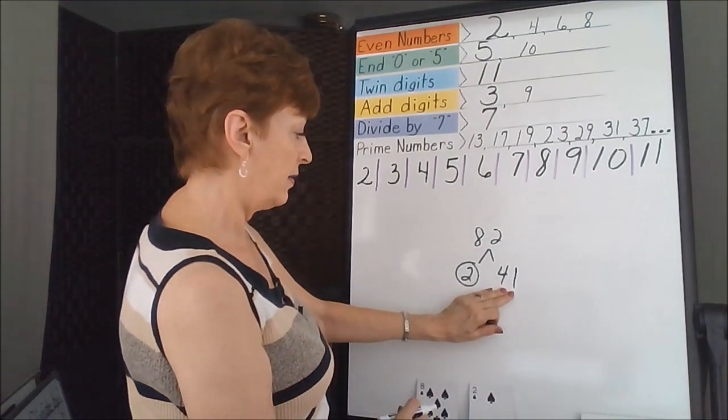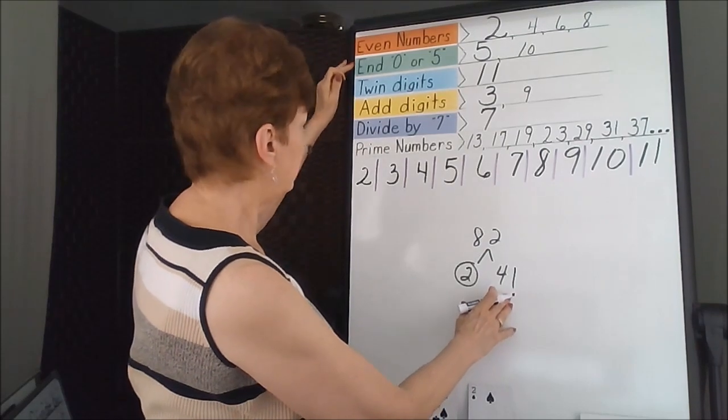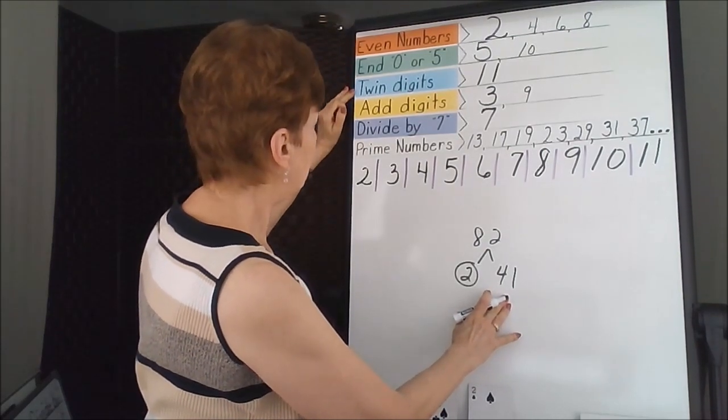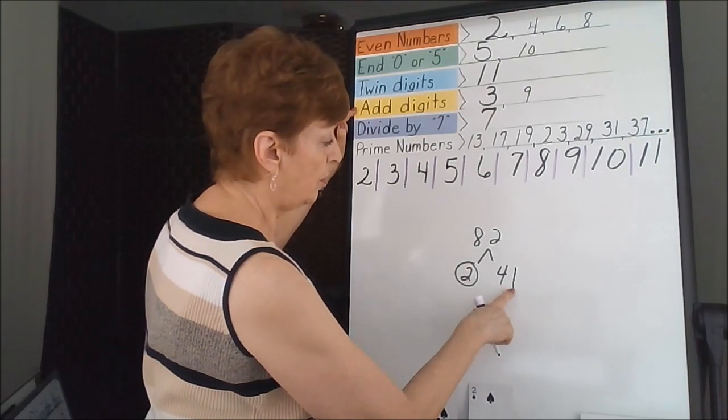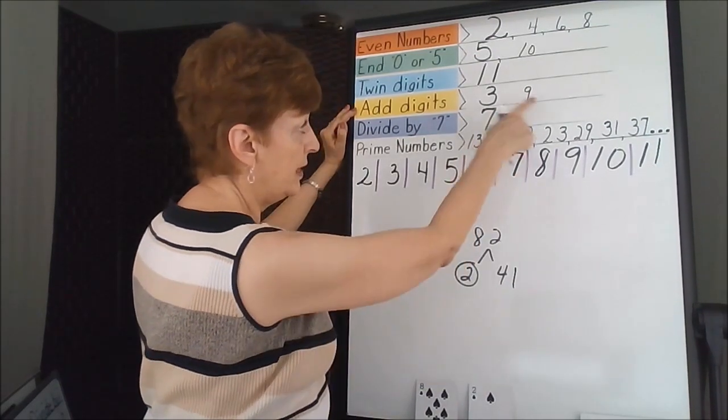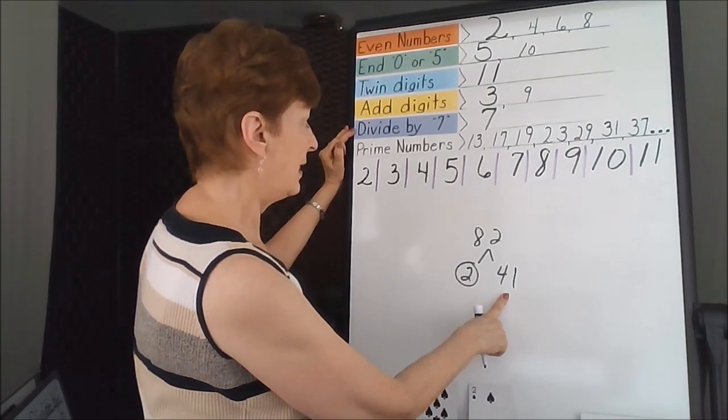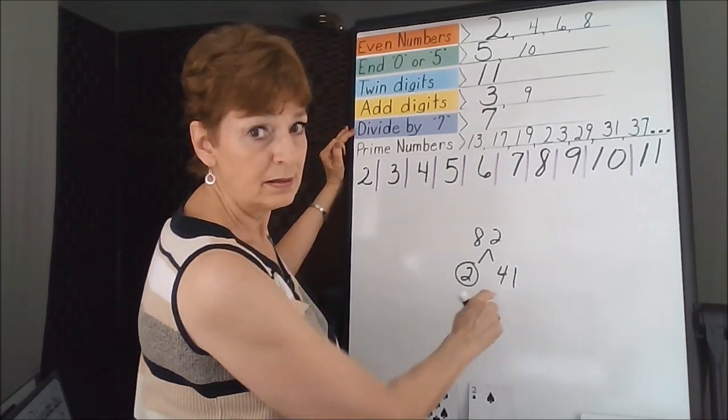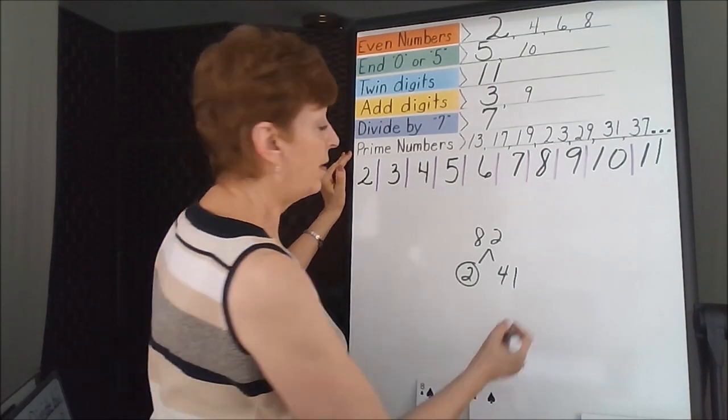Let's work on the 41. Is it even? No. Ends in 0 or 5? No. Twin double digit? No. Let's add the digits: 4 plus 1 is 5. 3 and 9 will not divide into 5 evenly, so let's skip it. Is anything times 7 equal to 41? No. That must be a prime number, and it is.